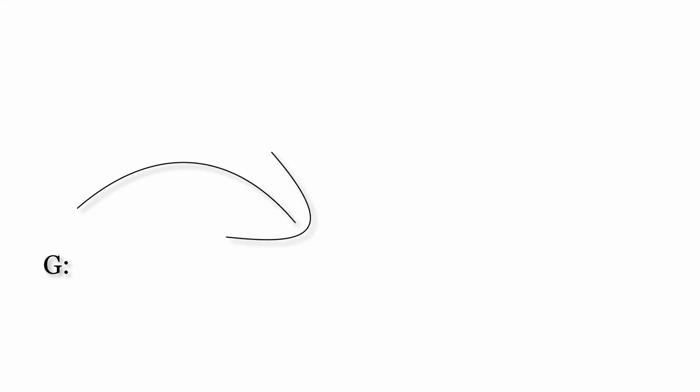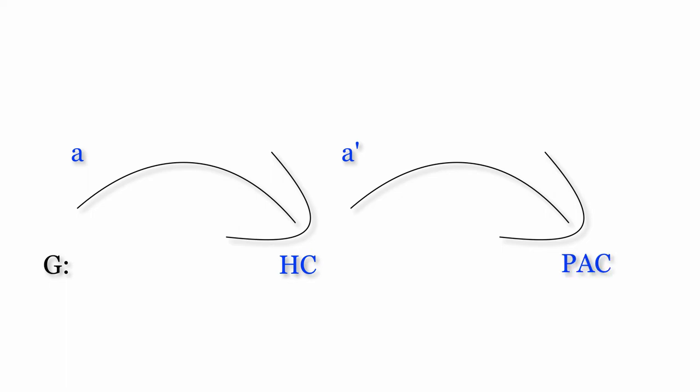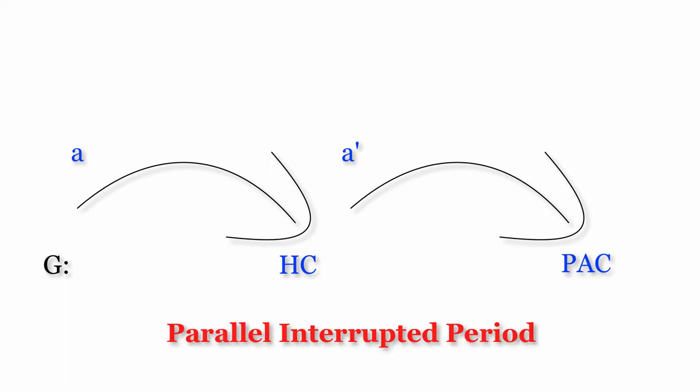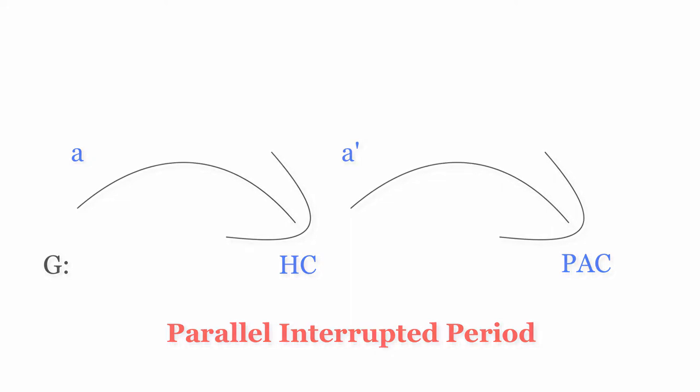In this example, the first phrase ended with a half cadence in G major. The second phrase began with the same melody, and ended with a PAC in G major. All together then, we have a parallel interrupted period.